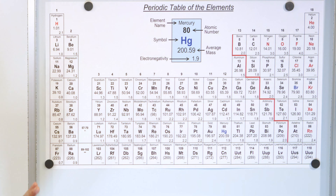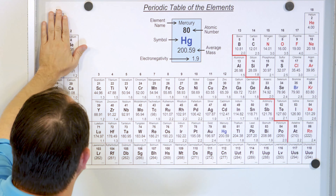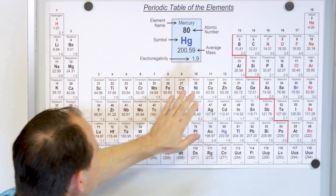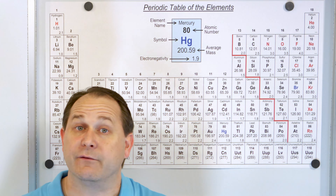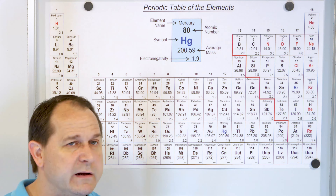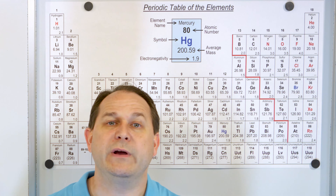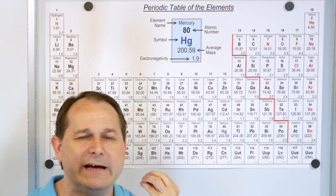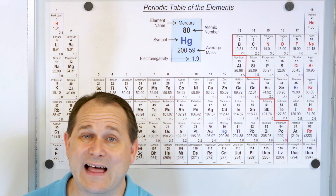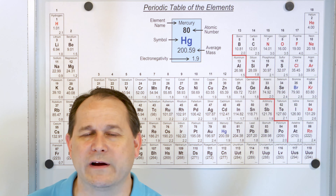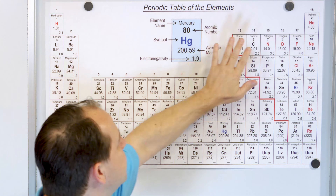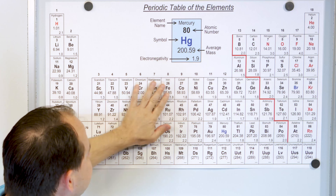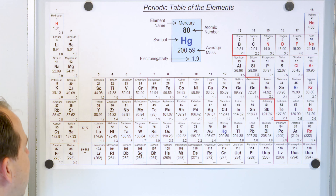We're going to learn the structure of this whole table, but really we use the left-hand side and the right-hand side more than anything else. In a chemistry class — which we call inorganic chemistry one or general chemistry — we use those elements mostly. The elements in the middle are used as well, but not as much.